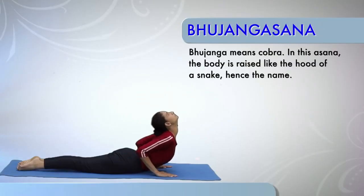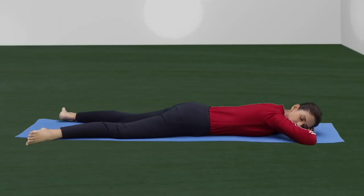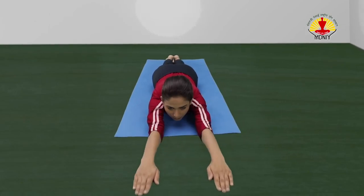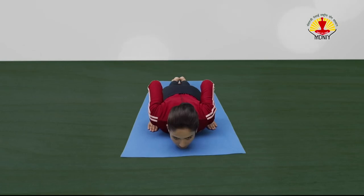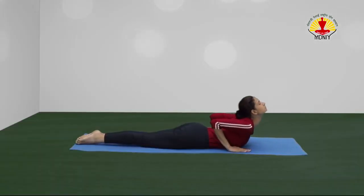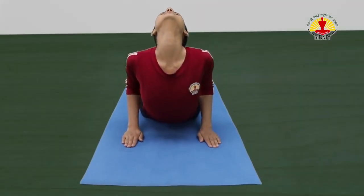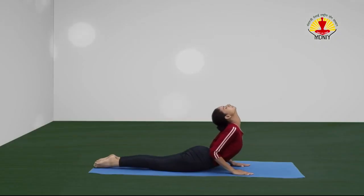Bhujangasana or the Cobra Posture. Caution! Those suffering from hernia and stomach ulcers should not practice this asana. Start with Makarasana. Now join the legs and place your palms beside the chest with elbows close to the body. Inhale and slowly lift the head and chest up to the navel region with the help of spinal muscles. Keep the elbows parallel and maintain the final position for three to ten breaths with body awareness.